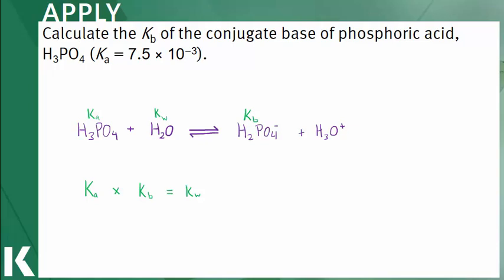Therefore, Kb equals Kw over Ka. Now we can plug in our known values and solve for the Kb. The dissociation constant of water, Kw, is equal to 1 times 10 to the negative 14th. And that is divided by a Ka of 7.5 times 10 to the negative 3rd. Therefore, Kb is equal to 1.3 times 10 to the negative 12th.